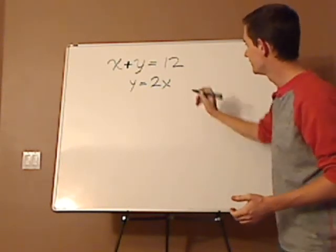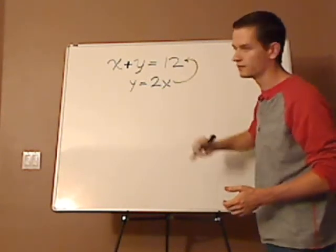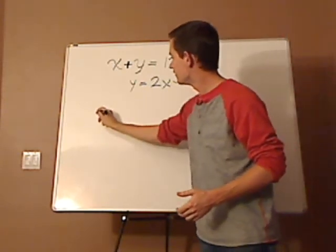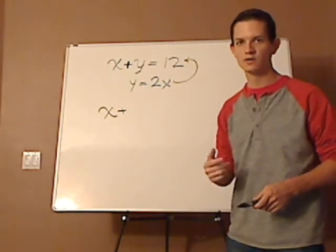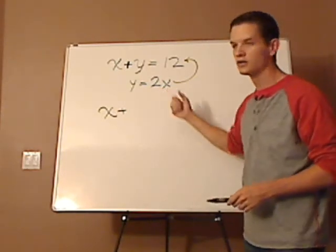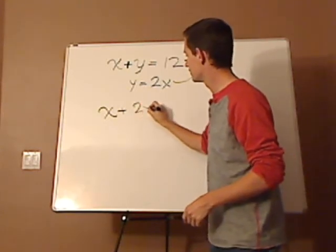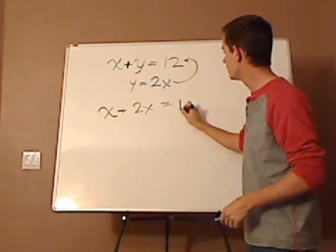So what you can do is take this equation and plug it into the first one. When you do that, you have X plus, and you're replacing the Y with 2X. So you replace it with 2X, place it in there. 2X equals 12.